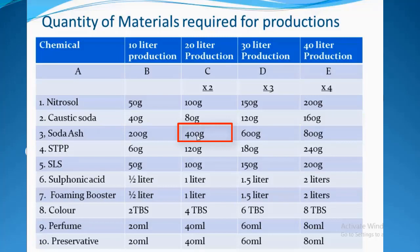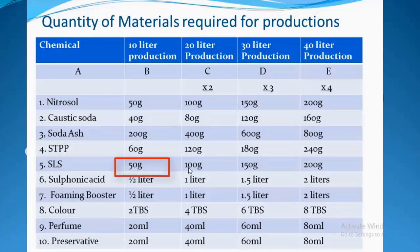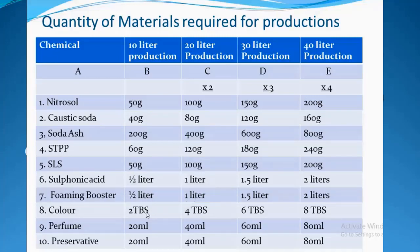To produce 20 liters of liquid soap you will need 400g of soda ash (200 × 2). For STPP: 60g × 2 = 120g. For SLS: 50g × 2 = 100g. For sulfonic acid: half a liter × 2 = 1 liter. For foaming booster: half a liter × 2 = 1 liter. For color: 2 tablespoons × 2 = 4 tablespoons. For perfume: 40ml. And for preservative: 40ml to produce 20 liters of liquid soap.